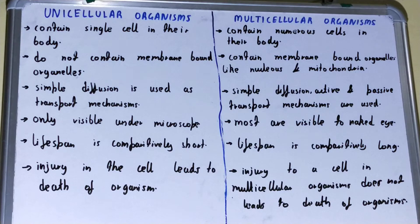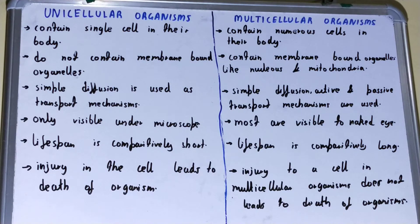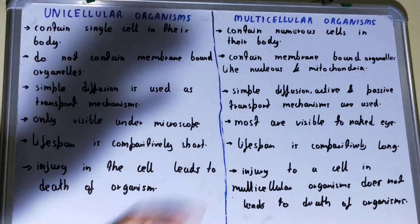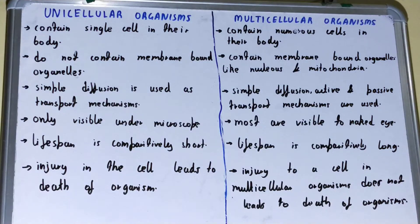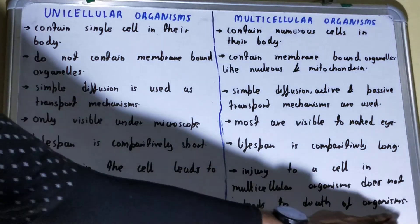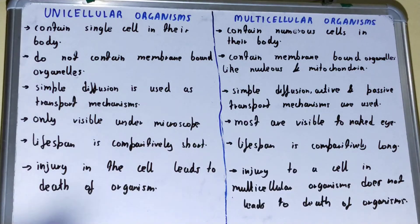Next, if we talk about injury to the cell: in the case of unicellular organisms, any injury to the cell leads to the death of the organism, because the organism has only one cell in its body, and if that particular cell is damaged then the organism dies. But if we talk about multicellular organisms, injury to a cell does not lead to the death of the organism — only that part will be affected, but the multicellular organism will stay alive.